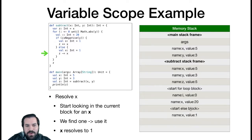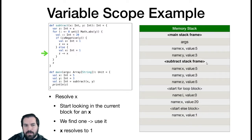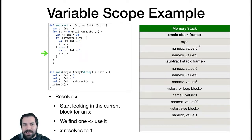x resolved to 1. Think of the blocks as soft lines and stack frame boundaries as hard lines. We start looking in the else block. If we don't find something, we look in the loop block. If we don't find it there, we look in the subtract stack frame itself. But once we hit a stack frame boundary, that's a hard line — you cannot look beyond it. That's out of scope regardless of any conditions.